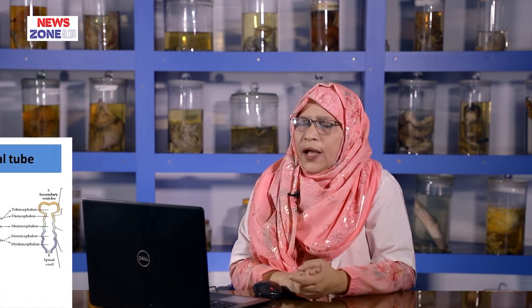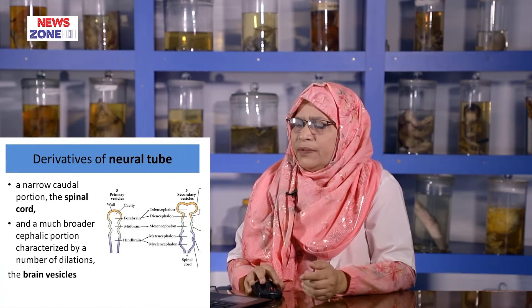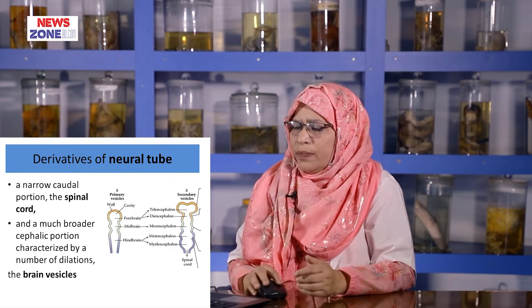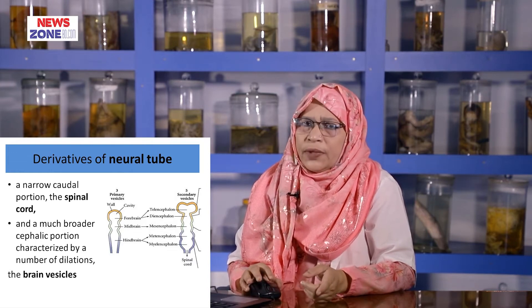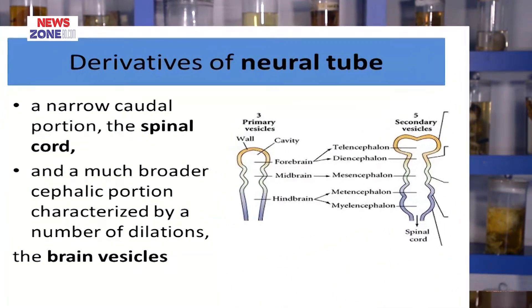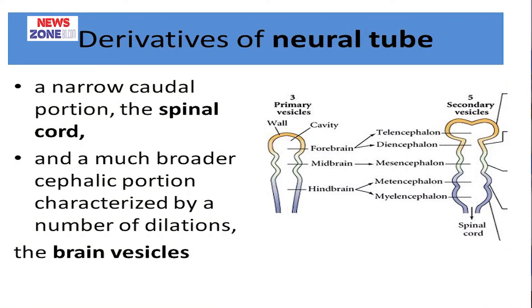This tube is responsible for the formation of the central nervous system. The derivatives of the neural tube: the most caudal end is responsible for the formation of the spinal cord. The much broader cephalic portion is characterized by a number of dilations known as brain vesicles — first three primary brain vesicles, then five secondary brain vesicles.